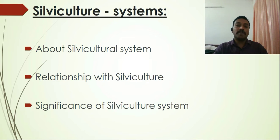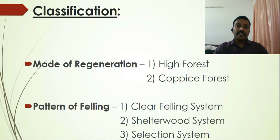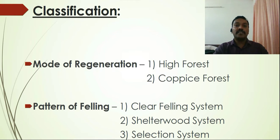In this chapter we will study what is silviculture system, how it relates to silviculture, and its significance. The classification of silviculture systems is primarily based on two important factors: one is the mode of regeneration, and the second is the pattern of felling.